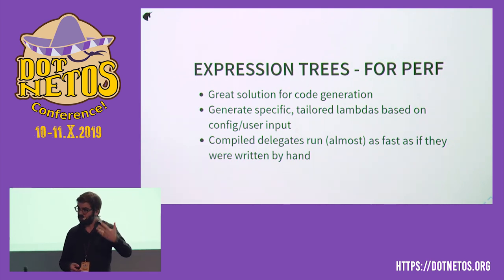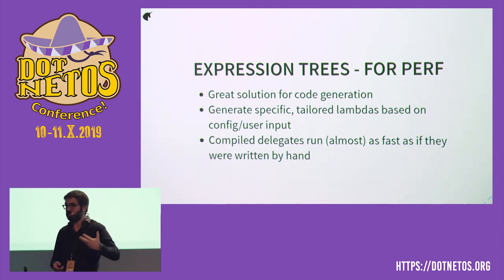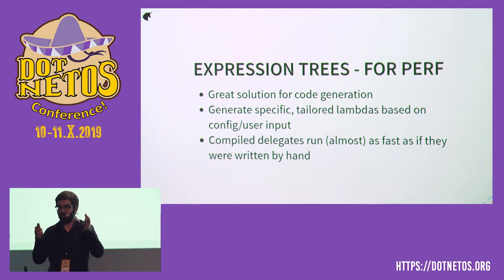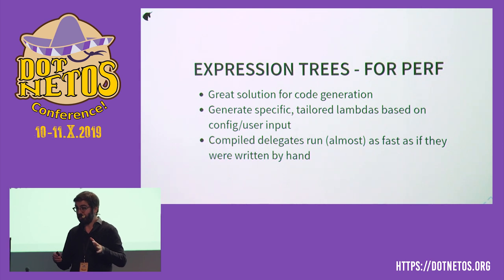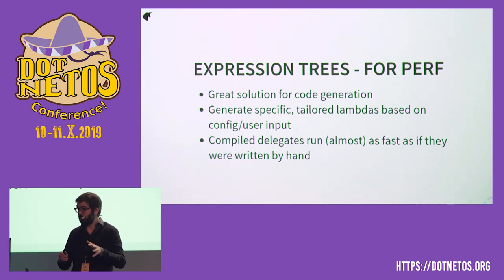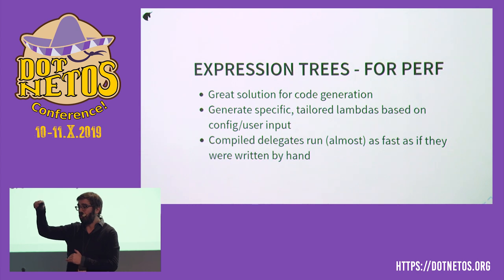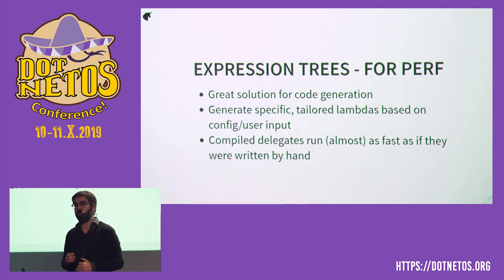Think about this when you have a very hot, perf-sensitive piece of code. You can sometimes speed it up — only in that case — by encoding the exact logic you want as an expression tree and then compiling it.